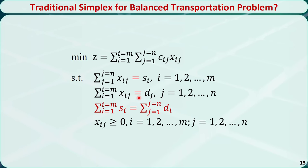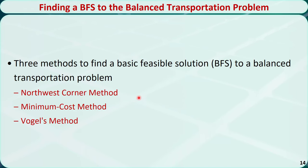The first step of the transportation simplex method is to find a basic feasible solution. This can be done using the northwest corner method, the minimum cost method, or Vogel's method. They will be introduced in other videos.